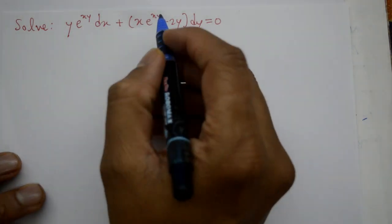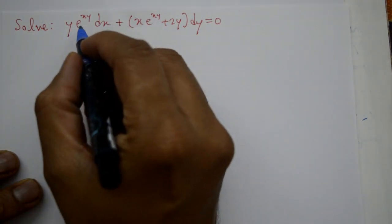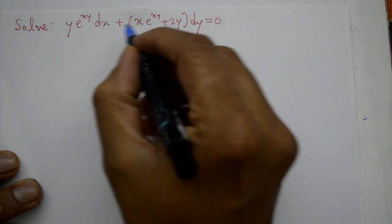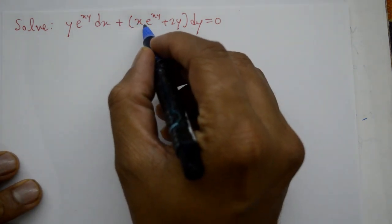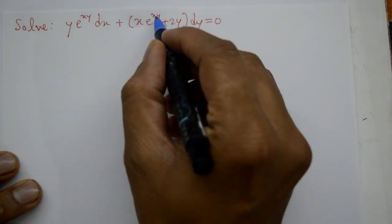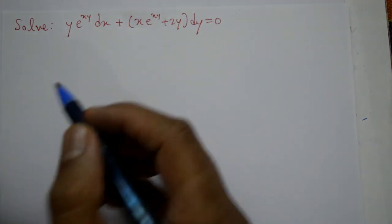Welcome friends, this problem ko solve karenge. Solve y into e to the power xy dx plus x into e raise to xy plus 2y into dy equal to 0 hai.